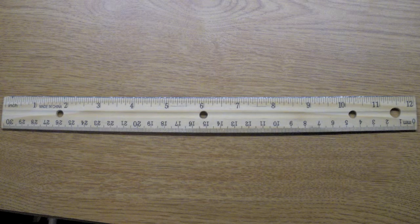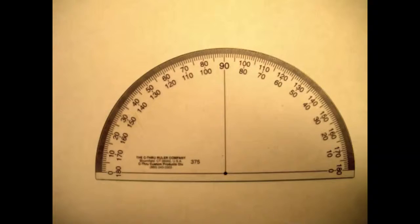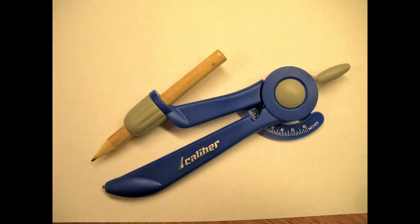This is a ruler. This is a protractor. And this is a compass.